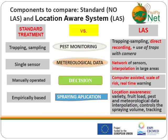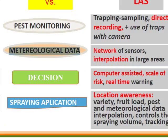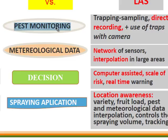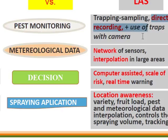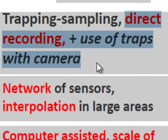The components compared between the standard (no-LAS) method and the location-aware system (LAS) include pest monitoring, meteorological data collection, the decision system, and spray application methodology. For pest monitoring, the standard method requires going to the field to count capsules on traps — the number of flies on sticky or McPhail traps — and collecting fruit or leaf samples. In the location-aware system, E-traps with cameras transmit images remotely to a computer in the office, where flies can be identified directly.